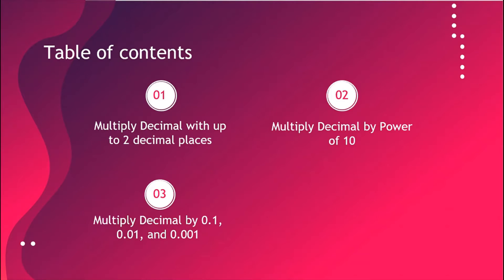For today's lesson, we are going to learn how to multiply with up to two decimal places, multiply a decimal by the power of 10, and lastly, we are going to learn how to multiply decimals by one-tenth, one-hundredth, and one-thousandth.